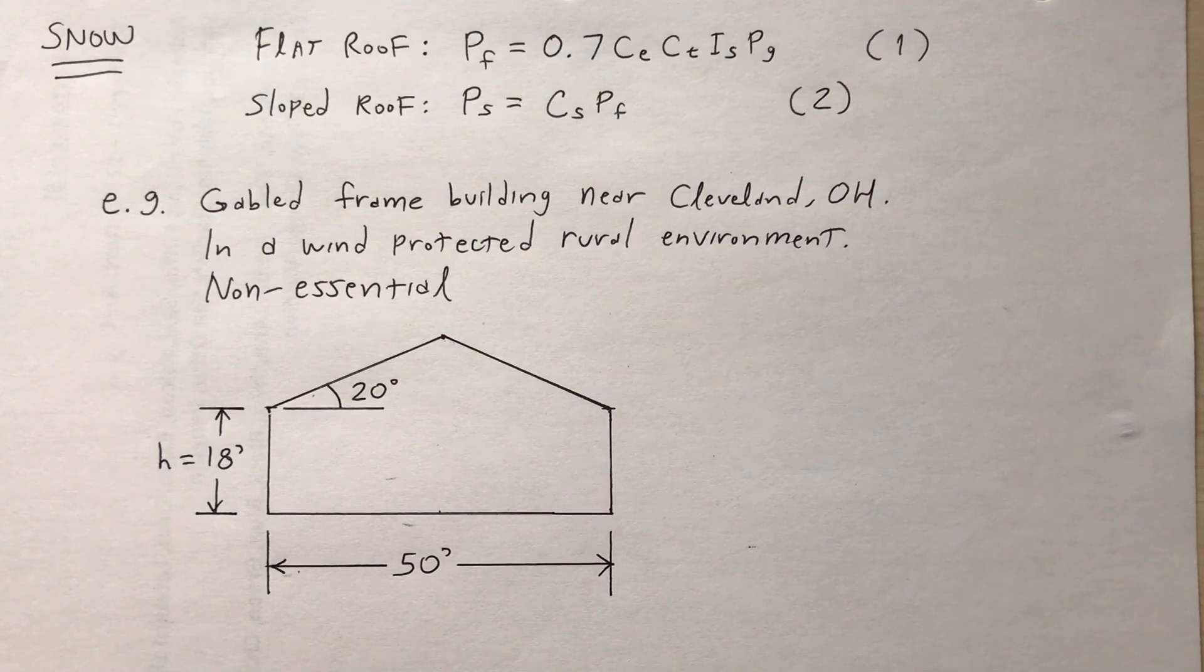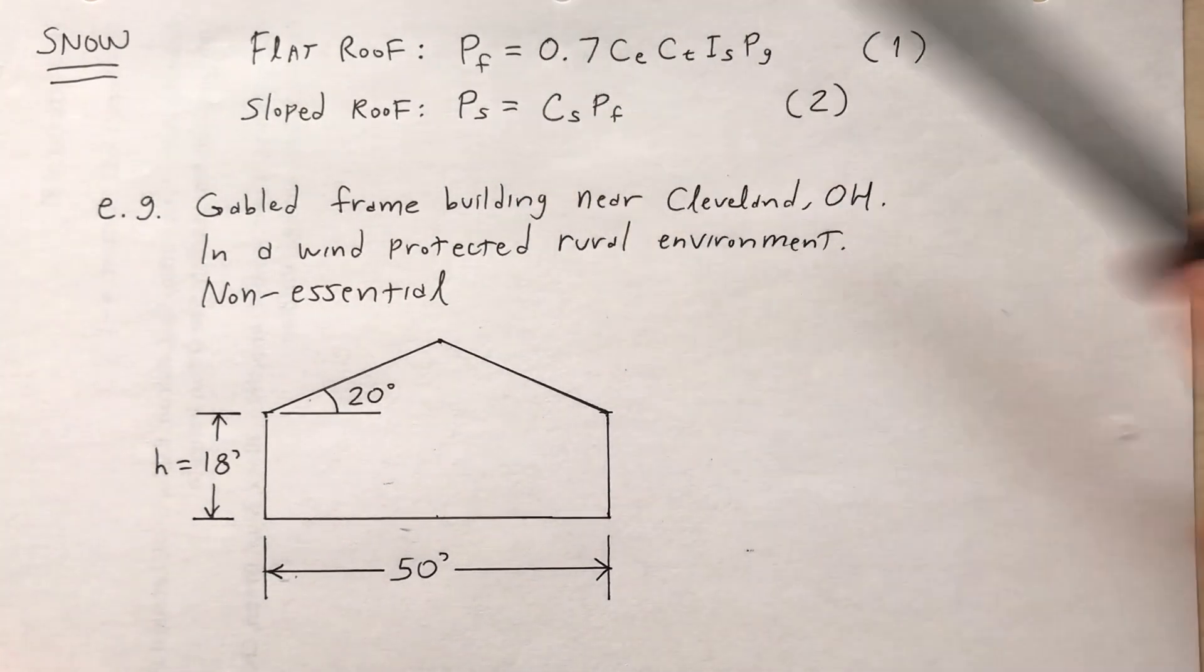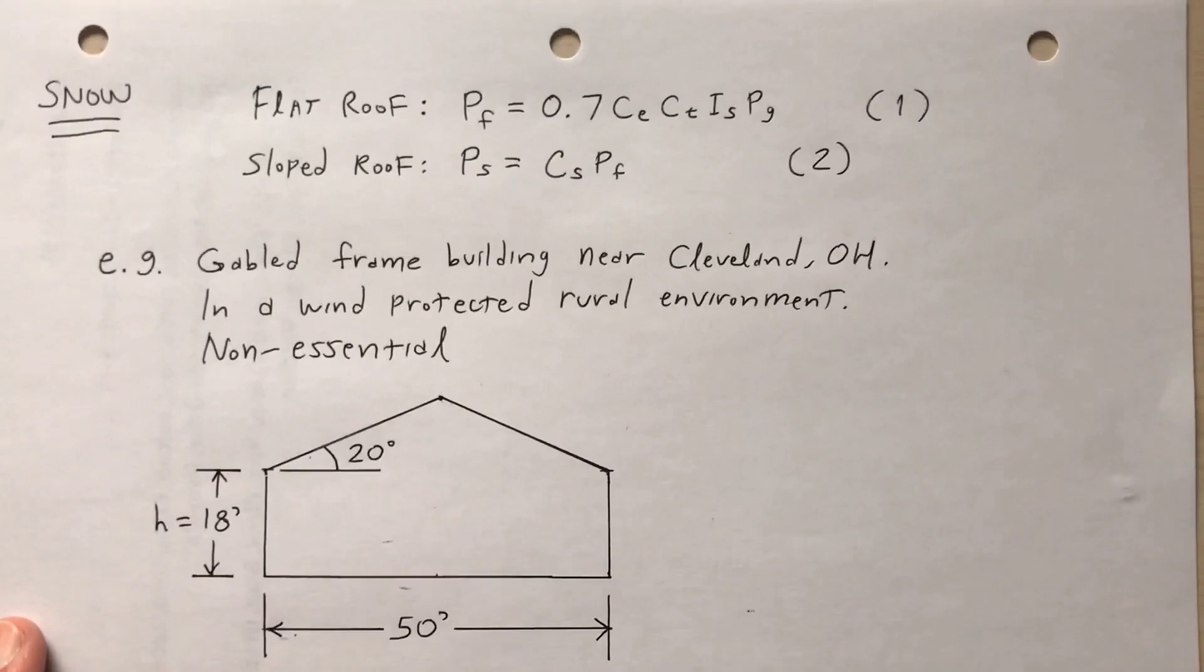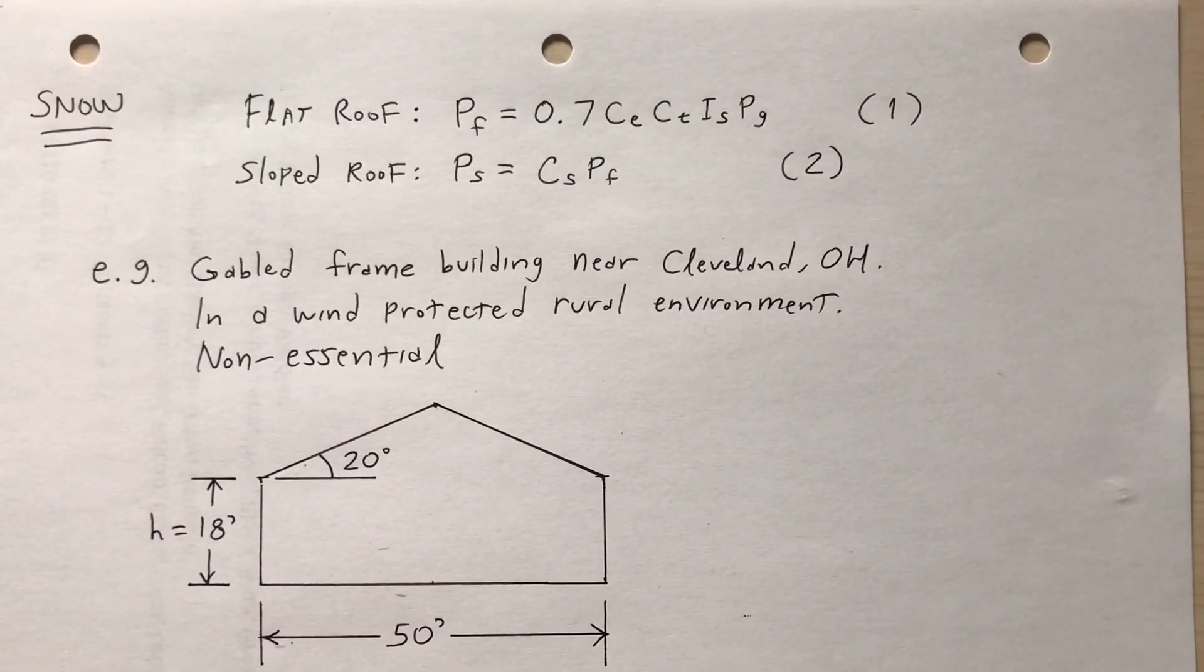Okay, so let's say we're designing for snow loads. Two different formulas I have here. Assuming the roof is flat, I've got p_f for flat, 0.7 times c_e times c_t times i_s times p_g. I'll call that equation one.